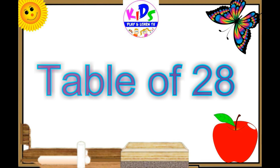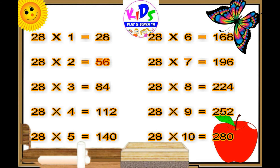Let's repeat. 28 ones are 28. 28 twos are 56. 28 threes are 84. 28 fours are 112. 28 fives are 140. 28 sixes are 168. 28 sevens are 196.